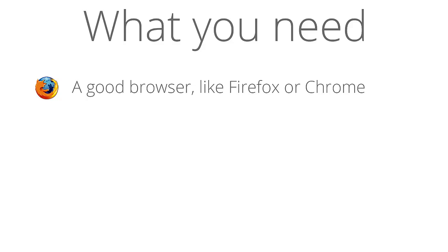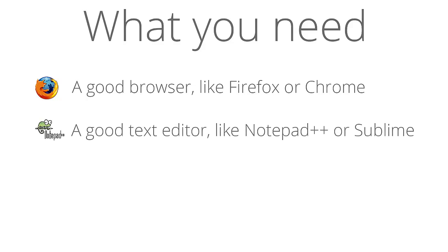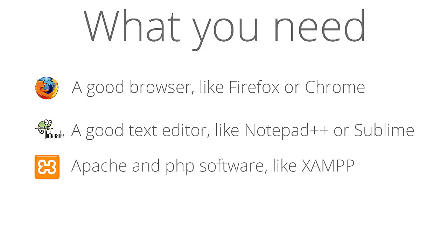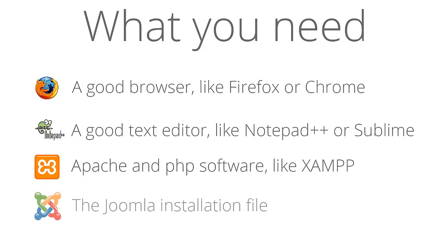Now let's talk about what you need to follow along with the series. First, you're going to need a good browser — I'm going to use Firefox, but Chrome is perfectly fine too. Then you're going to need a good text editor; as always I'm going to use Notepad++. If you are on a Mac you can't use Notepad++, so I recommend switching over to Sublime Text. I'll leave links in the description below. Since I'm going to install Joomla on my localhost, I also need to install some sort of Apache and PHP software — for my tutorials I'm going to be using XAMPP.